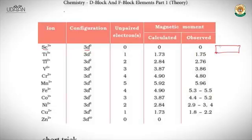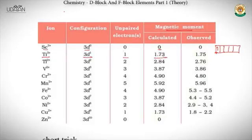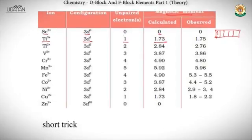For Ti³⁺, the configuration is 3d¹ with one unpaired electron, so magnetic moment = √(1×3) = √3 = 1.73 BM. For Ti²⁺, the configuration is 3d² with two unpaired electrons, so magnetic moment = √(2×4) = √8 BM. For V²⁺ (3d³), there are three unpaired electrons giving magnetic moment = √(3×5) = √15 = 3.87 BM.